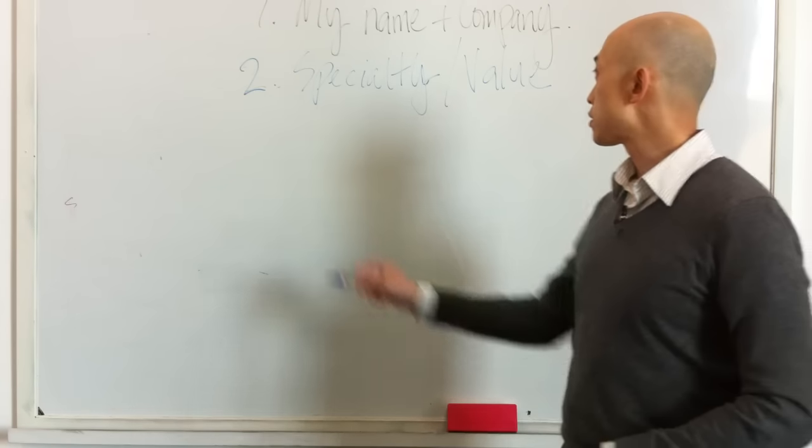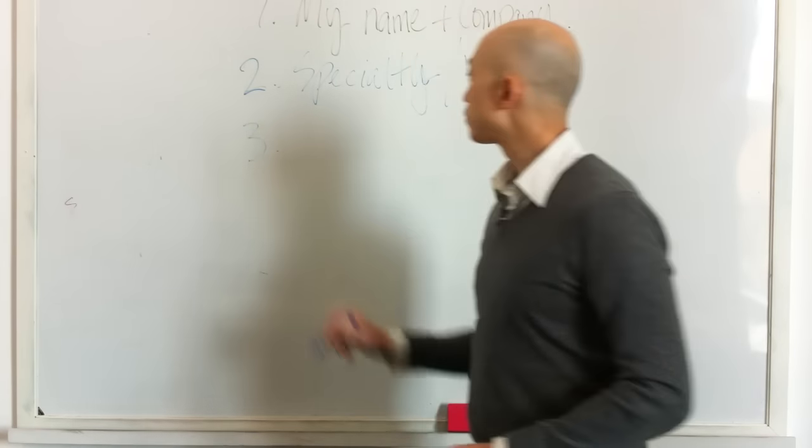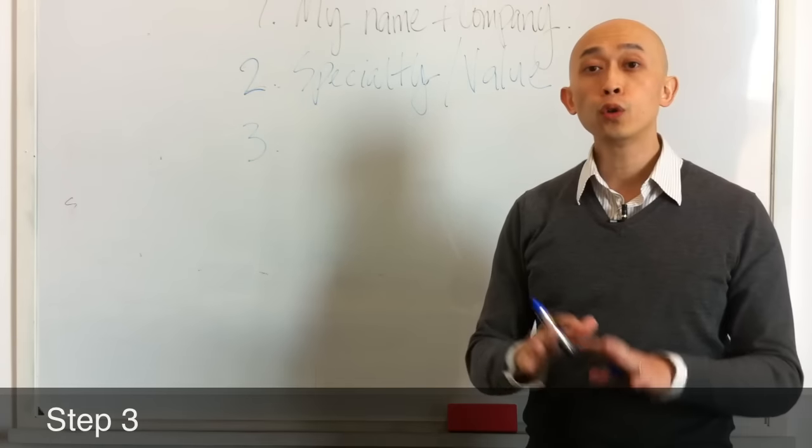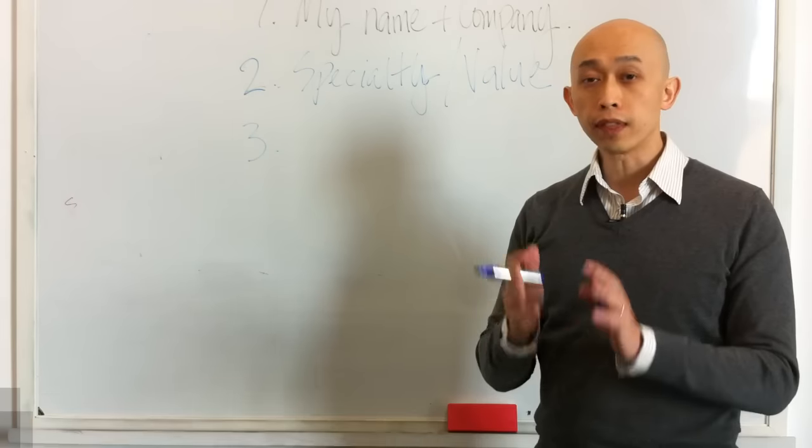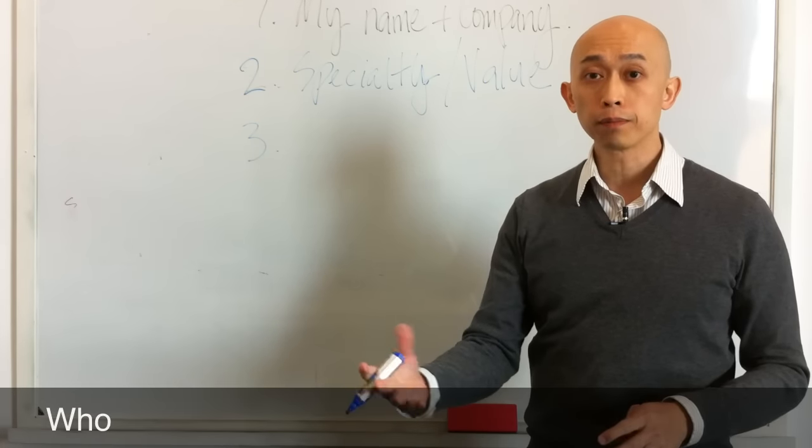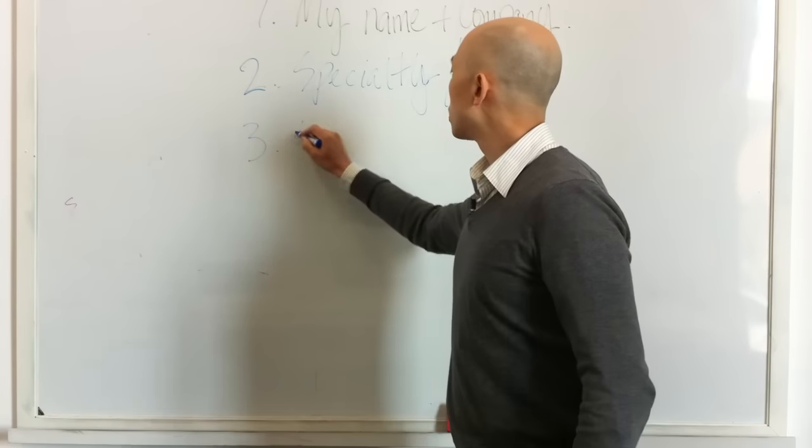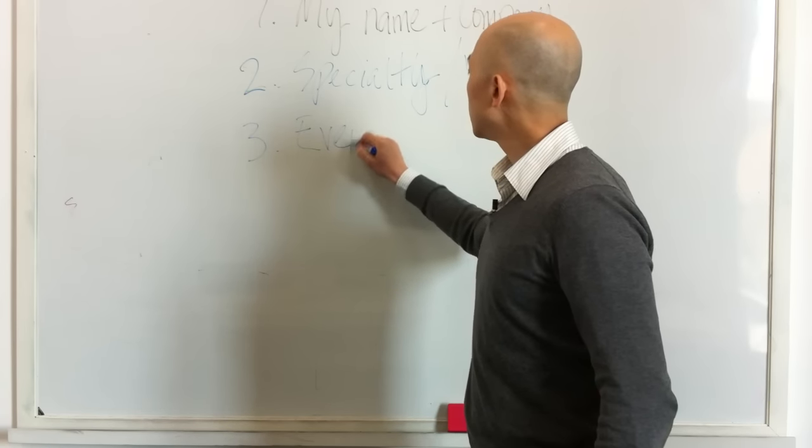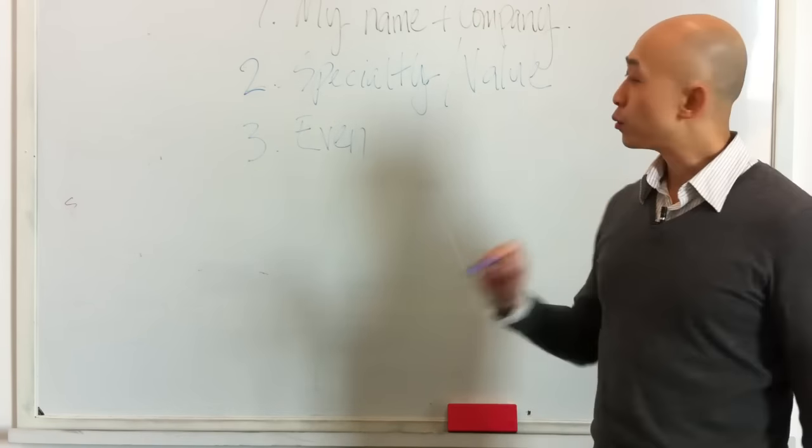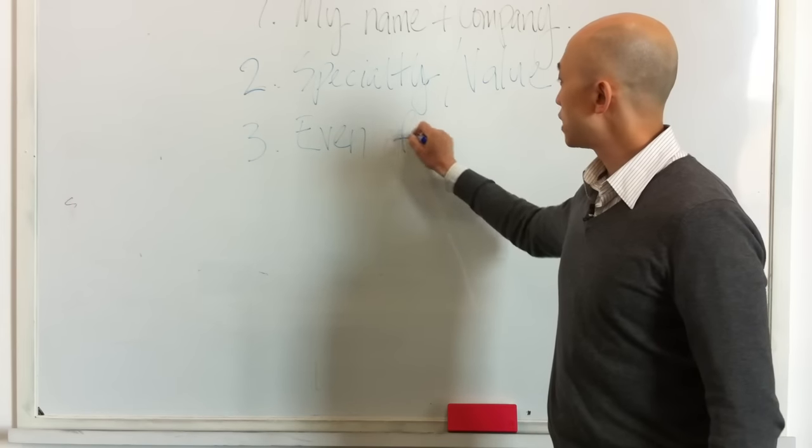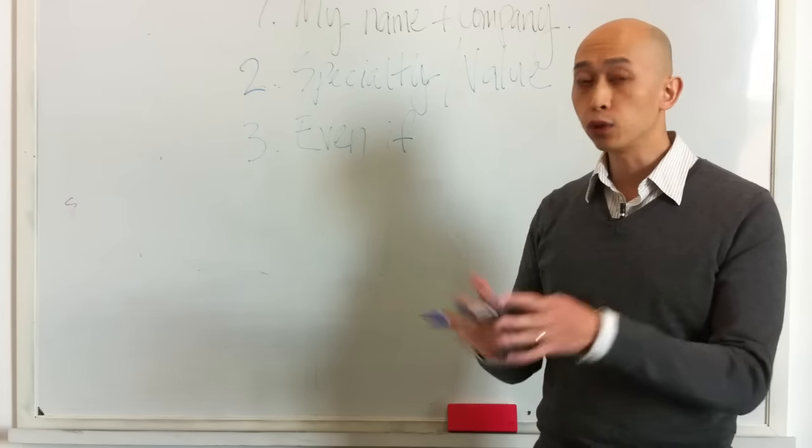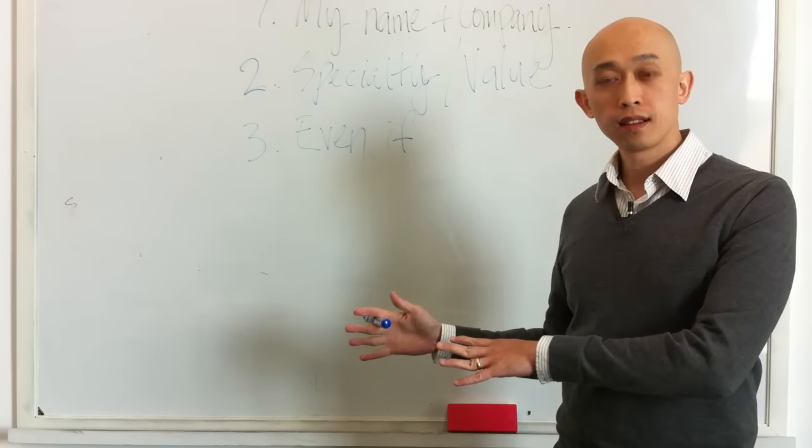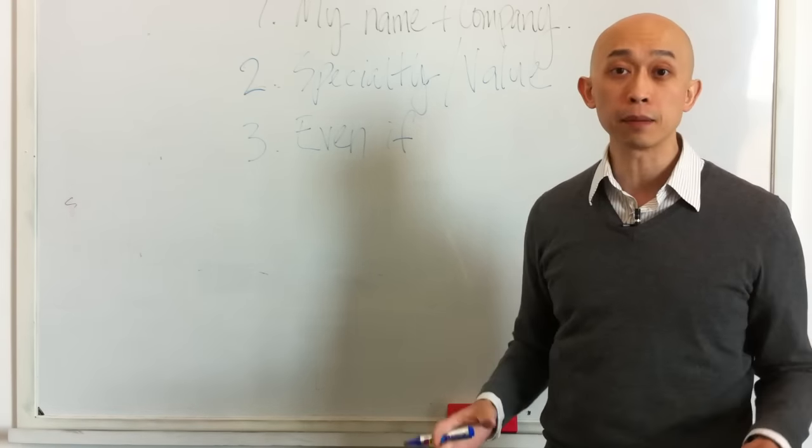Now, the third part of this, step number three, is to say who you can actually help. Because people want to know if they are the ones that you can help. Now, how do you do that? You would use the word even. And you would also follow that by even if. What does even if mean? It means, even if you can't do this, you can still do it. It gives them the possibility that you can help anybody.